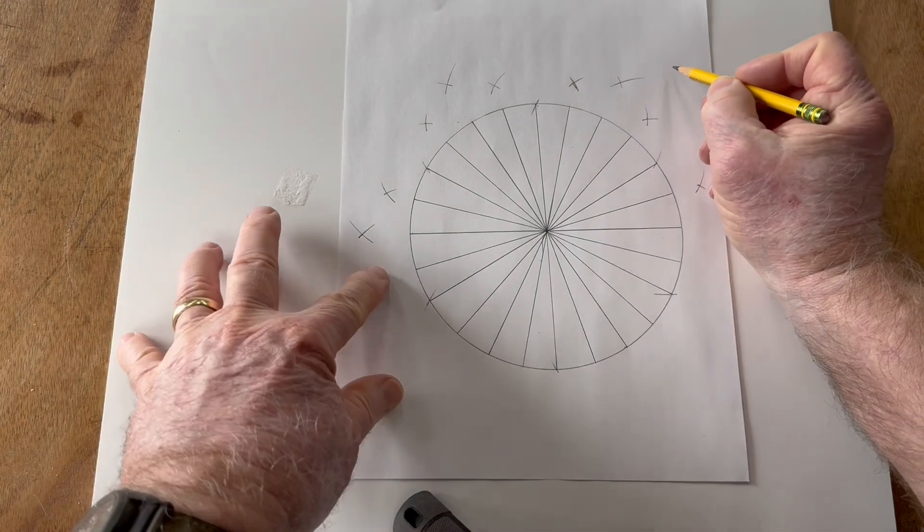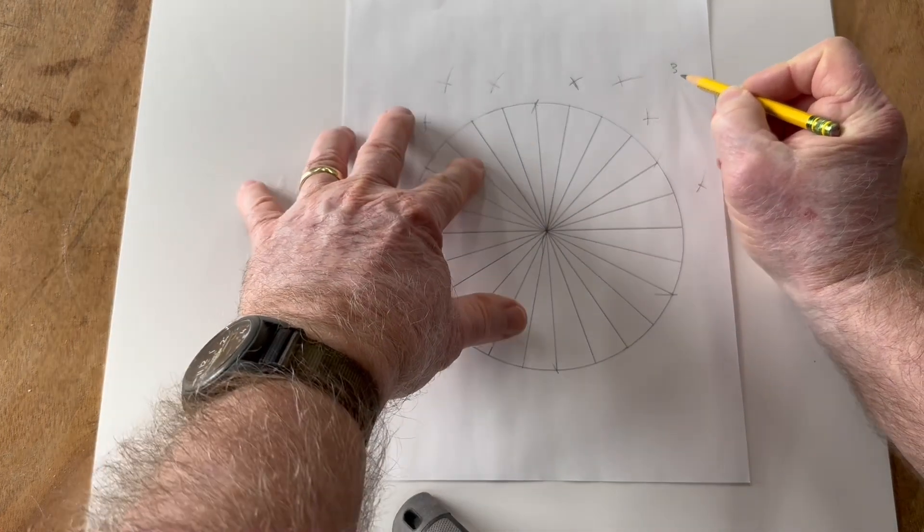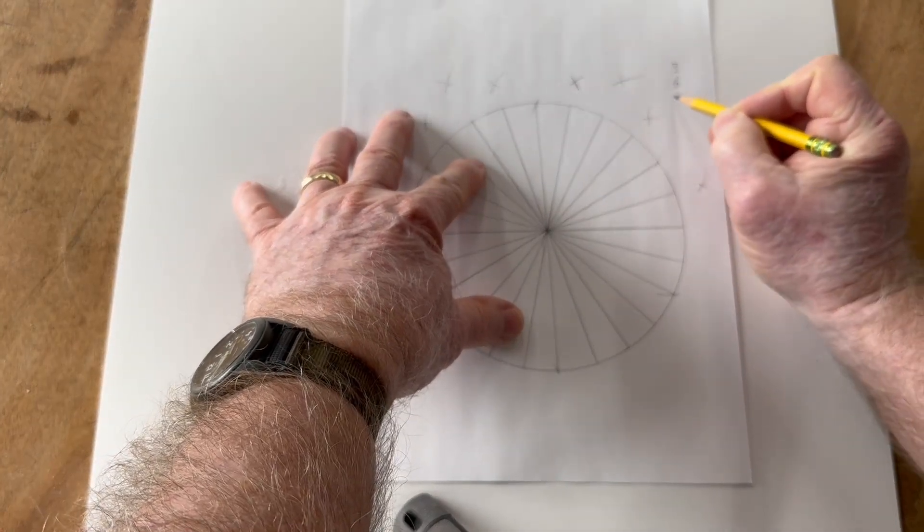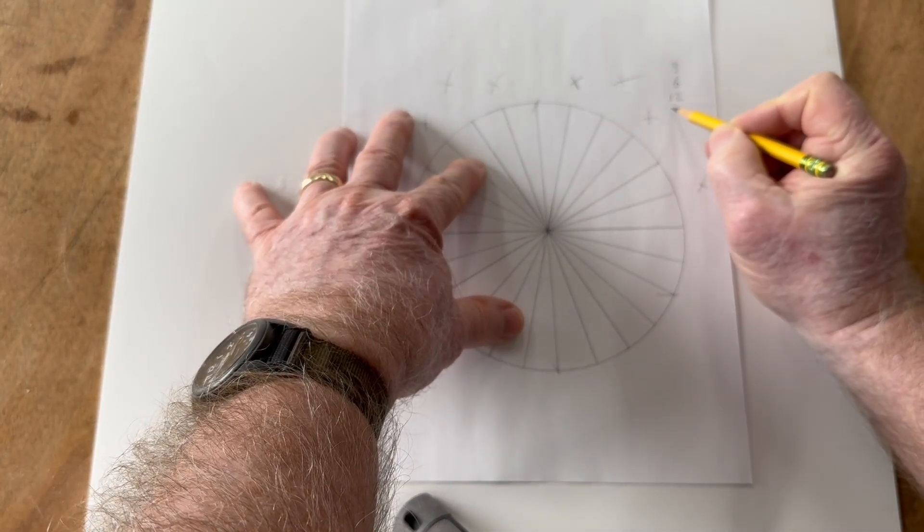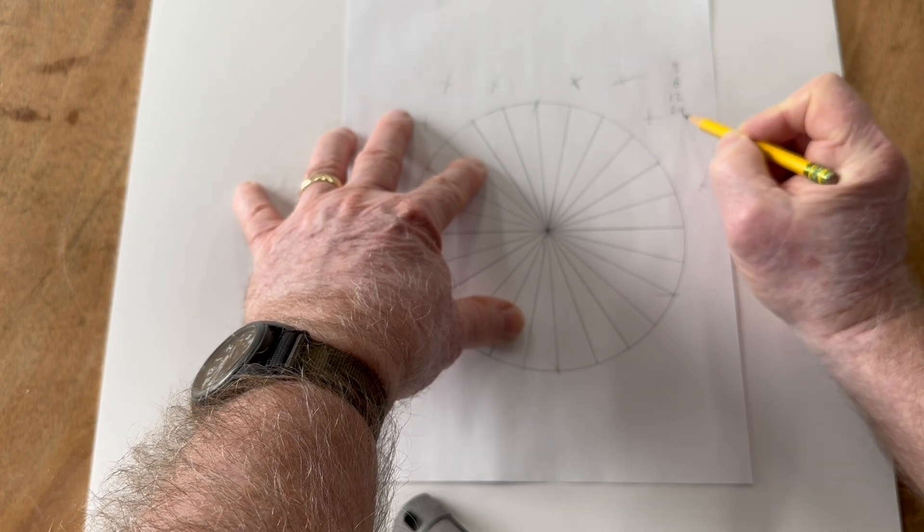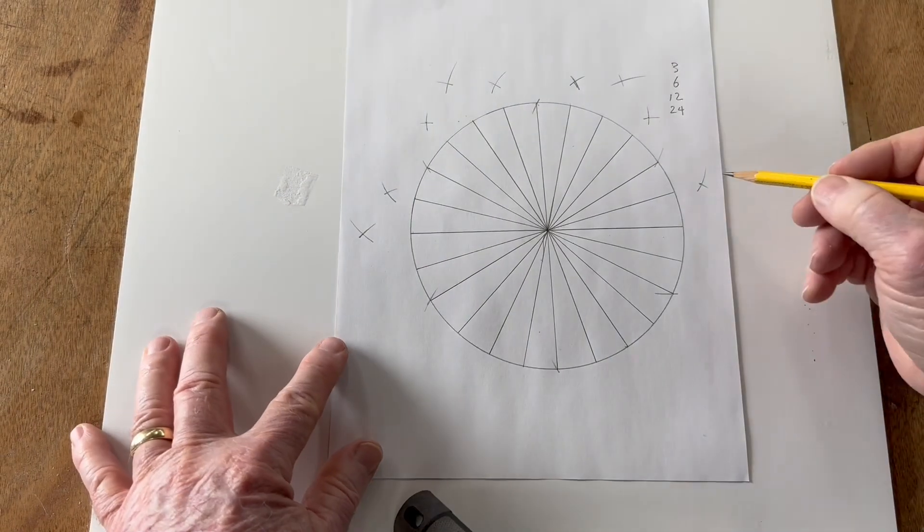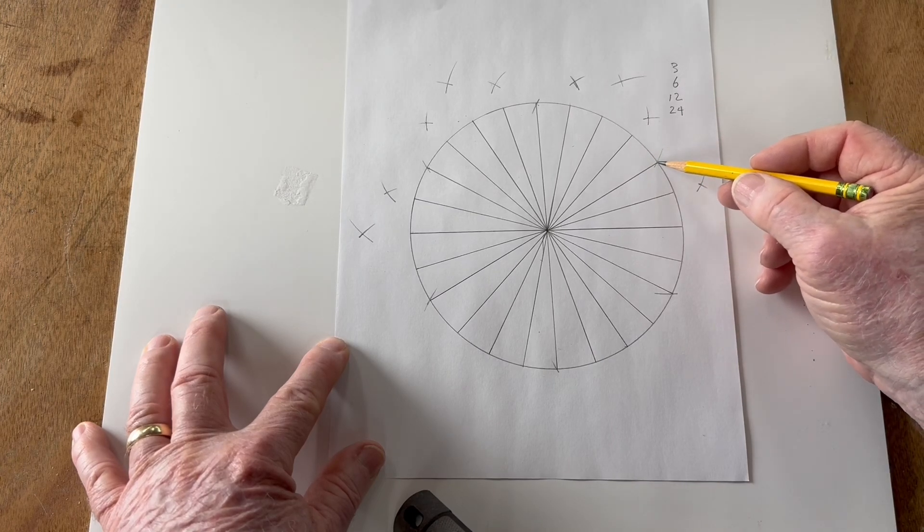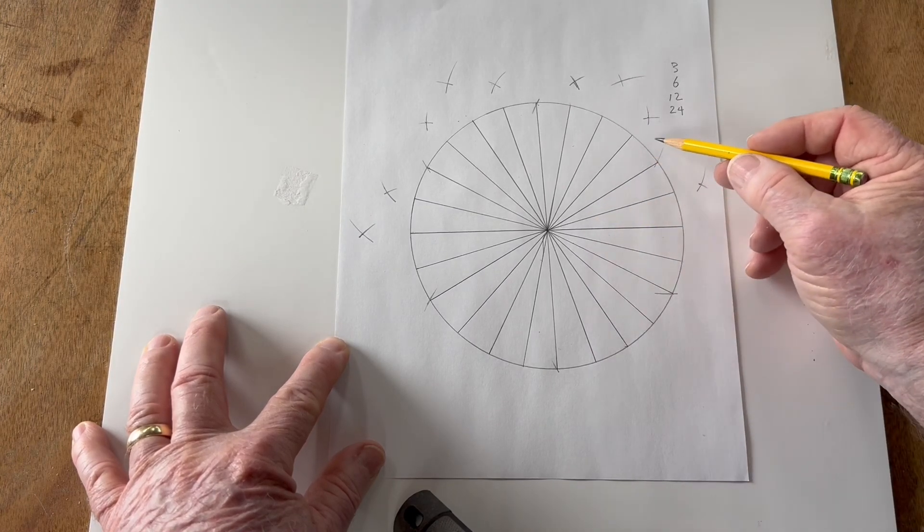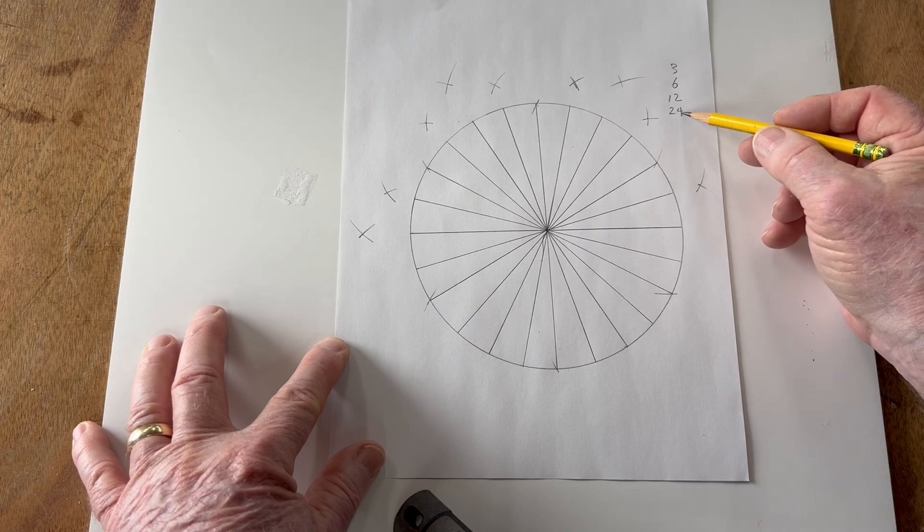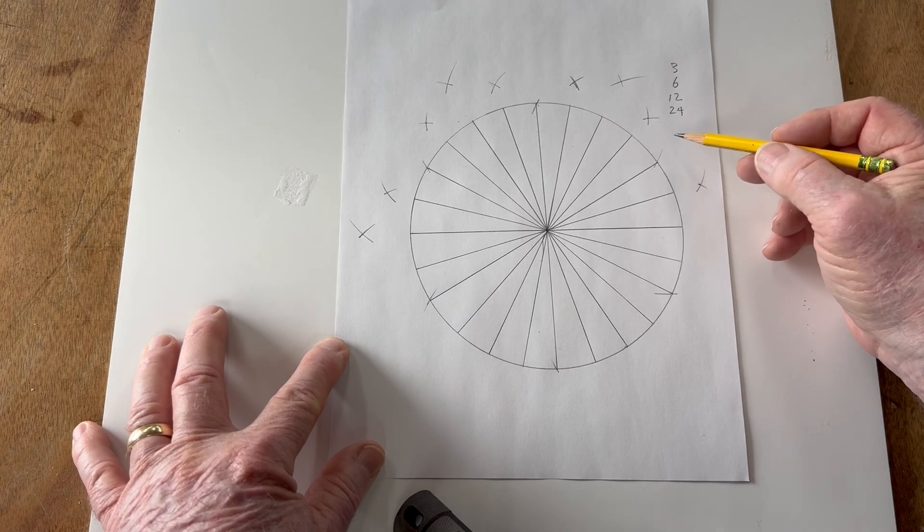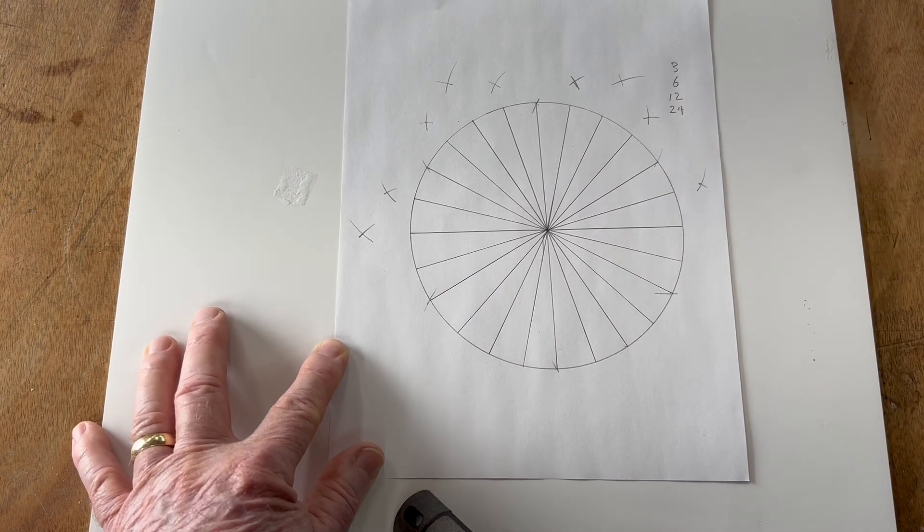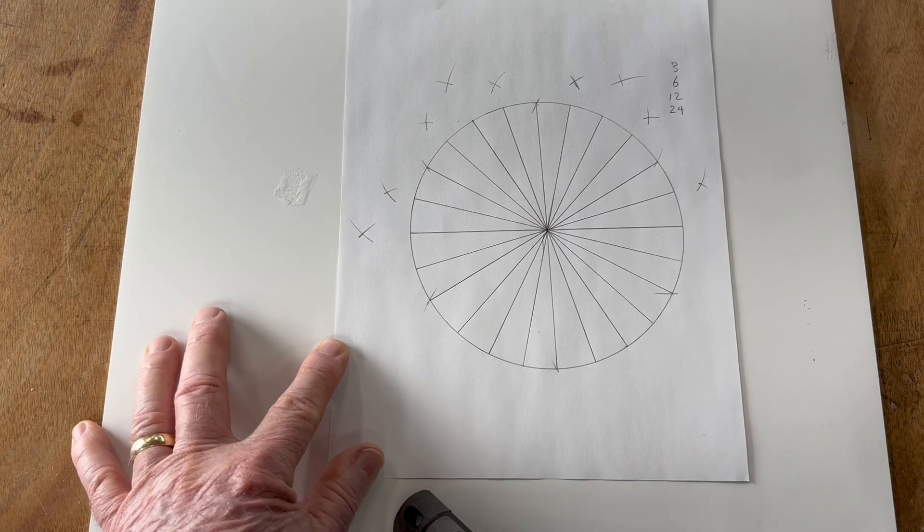So we went from 3 to 6 to 12 and to 24. We could take this even further and divide each of these sections in half, and the next one would be 48. But I think you see the idea and just how easy it is.